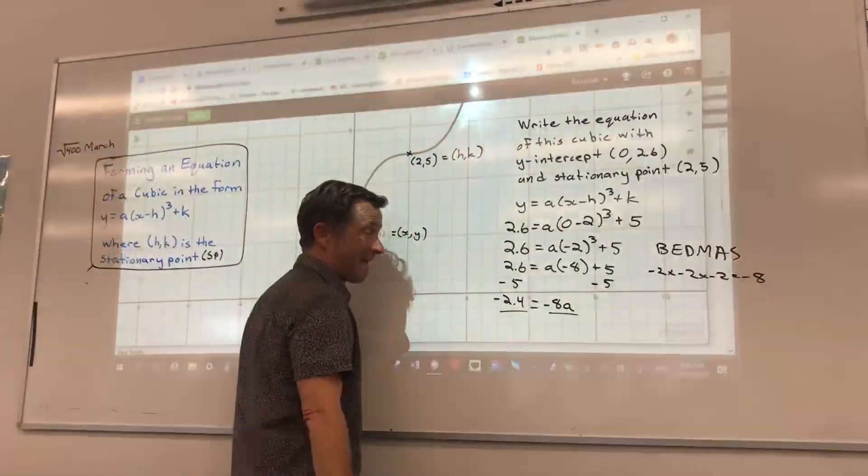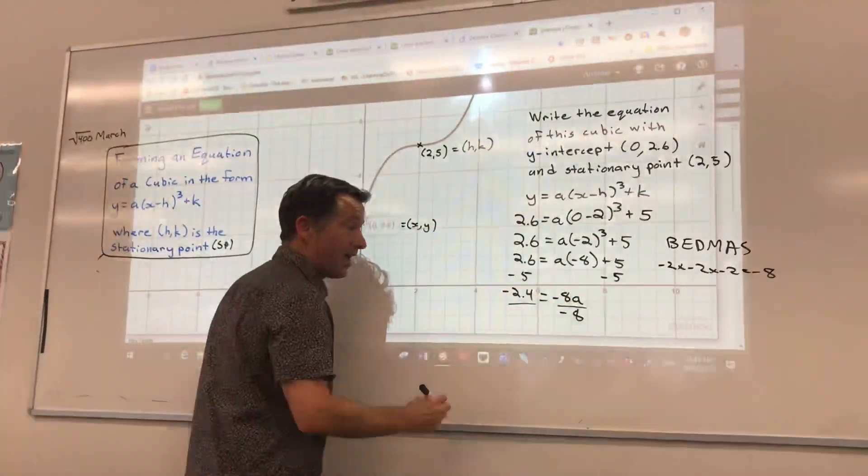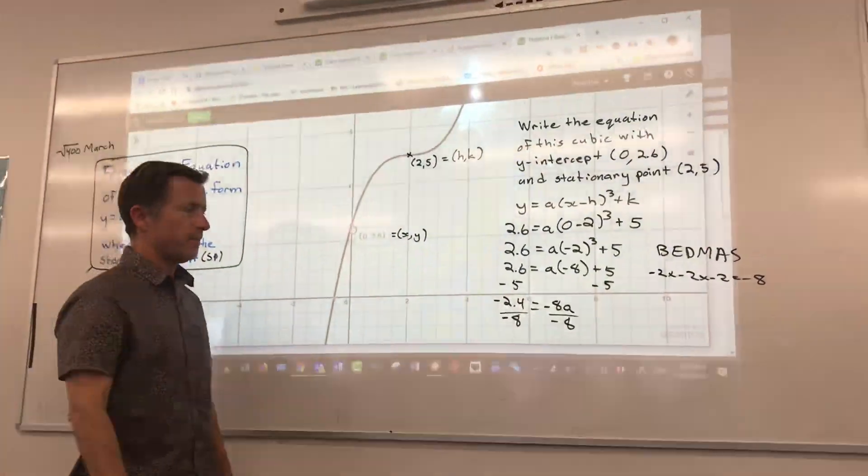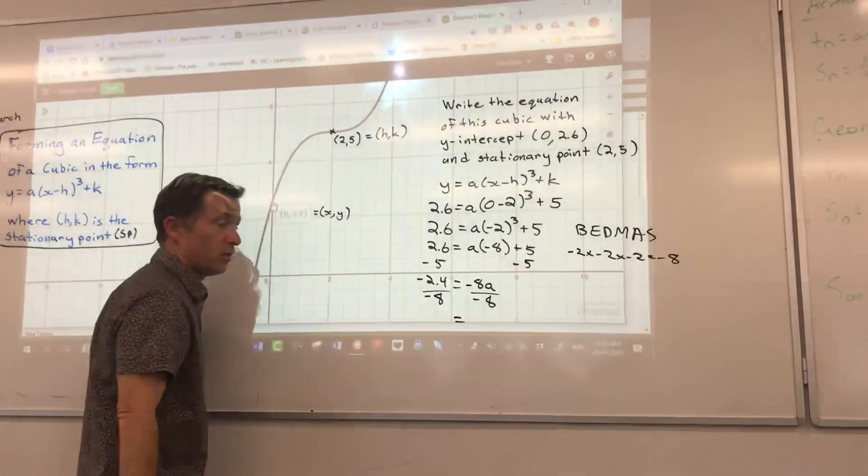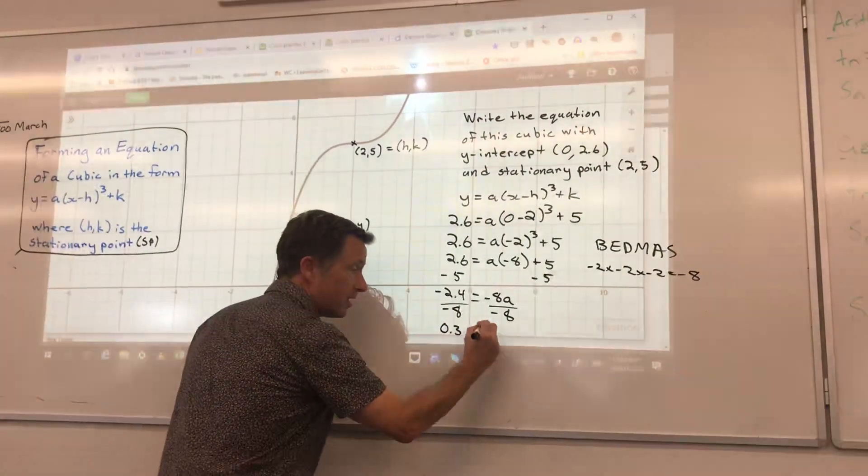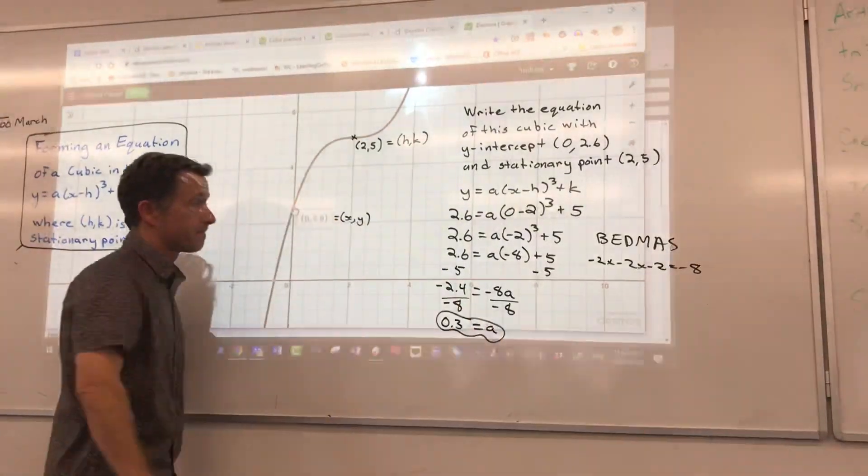And what's my last step to solve for a? Divide both sides by? A. Negative 8. Negative 8, not a. Goodness, we'd get nowhere fast there. 2.4, yeah. And I get my magic coefficient, negative divided by negative is positive, and I can do that in my head. It's 0.3. Oh, boy. Okay?